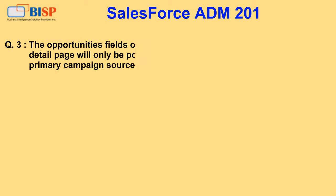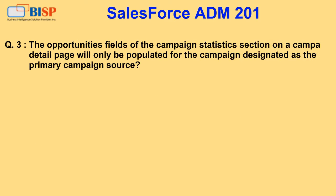Question 3. The opportunities fields of the campaign statistics section on a campaign detail page will only be populated for the campaign designated as the primary campaign source? A. True. B. False.